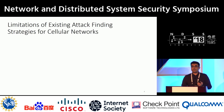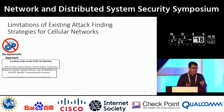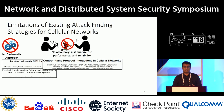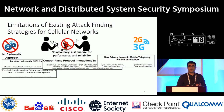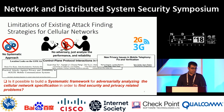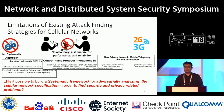But most of the work has at least one of the following limitations: they either do not have any systematic approach for attack discovery, sometimes the analyses do not have any adversarial concept, and some work is specifically focused on previous generations of cellular networks. So in this work, we pose the following research question: whether it is possible to build a systematic framework for adversarially analyzing the cellular network specification in order to find security and privacy-related problems.